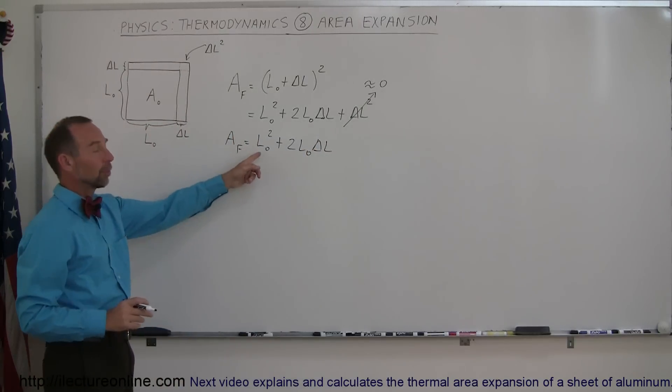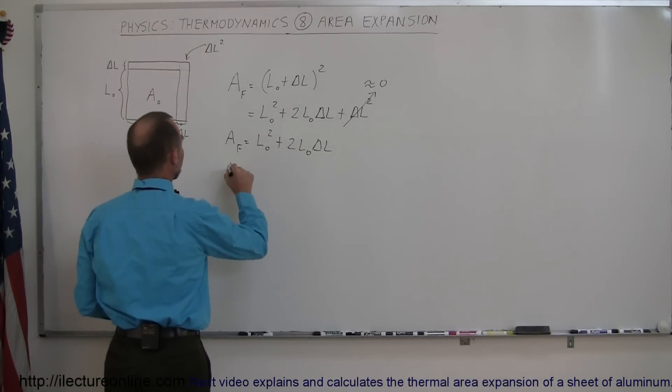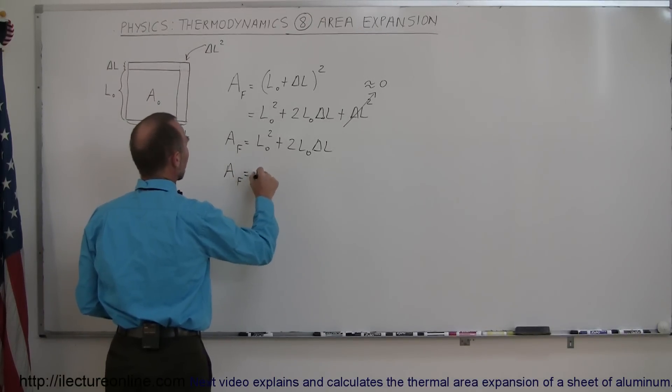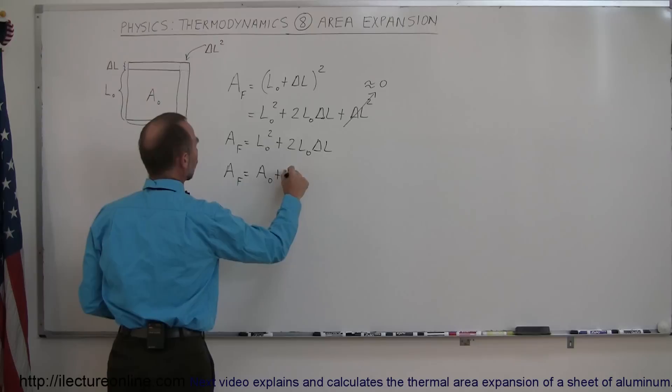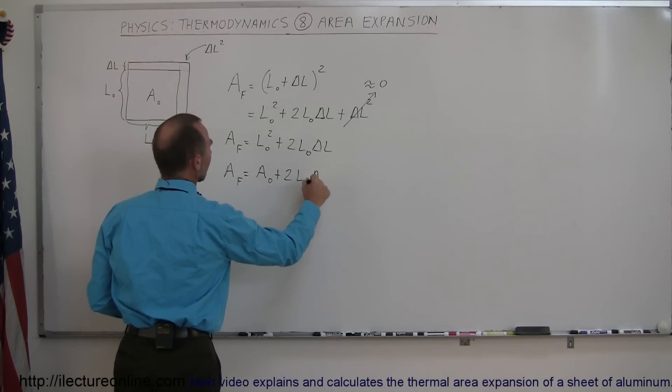Now, this L sub nought squared, of course, that's the original area, so we can say that A final is equal to the original area plus two L sub nought delta L.